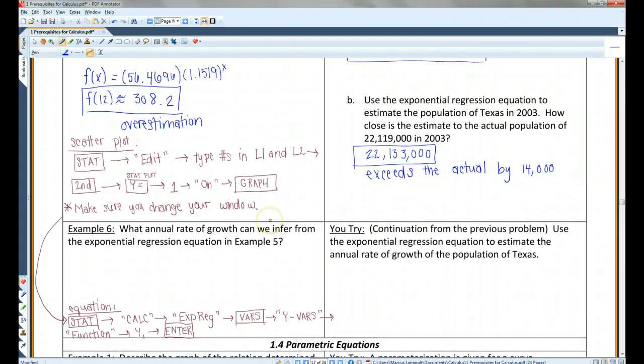Okay, so the annual rate of growth, if r is the annual rate of growth, we're going to have 1 plus r. And we're dealing with 10-year intervals. Okay. And this is going to equal approximately this. So from here, we just have to solve for r. So I'm going to take the 10th root of both sides. And then I'm going to subtract 1.